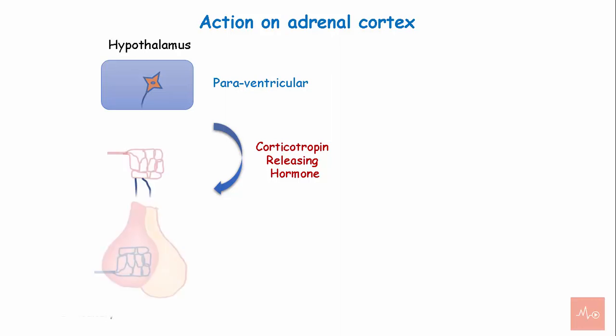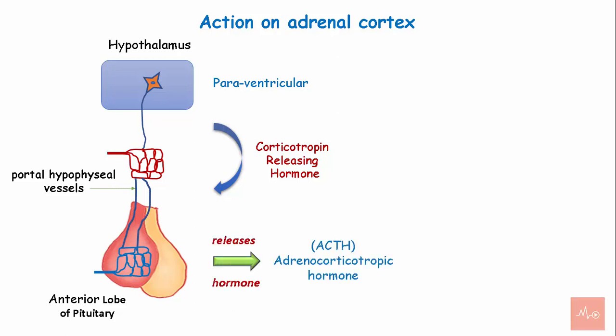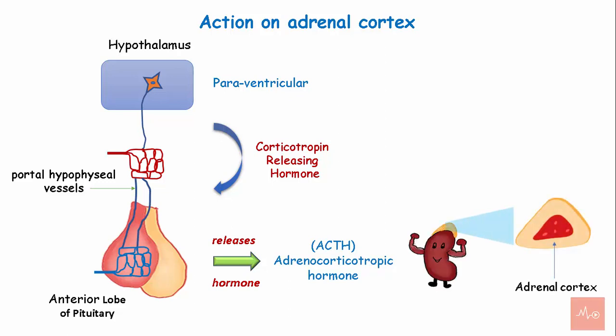The corticotropin releasing hormone reaches the anterior lobe of the pituitary through the hypothalamus-hypophysial portal vessels and signals the anterior pituitary to release adrenocorticotropin hormone. The ACTH then stimulates the adrenal cortex to synthesize and release cortisol.